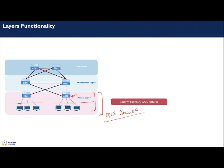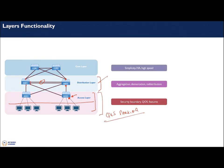The distribution layer is where you have your aggregation of routes and links, and it acts as the demarcation between your access and core layers. Quality of service also happens here — a common design is that marking happens at the access layer and then action is taken at the distribution layer based on those markings.